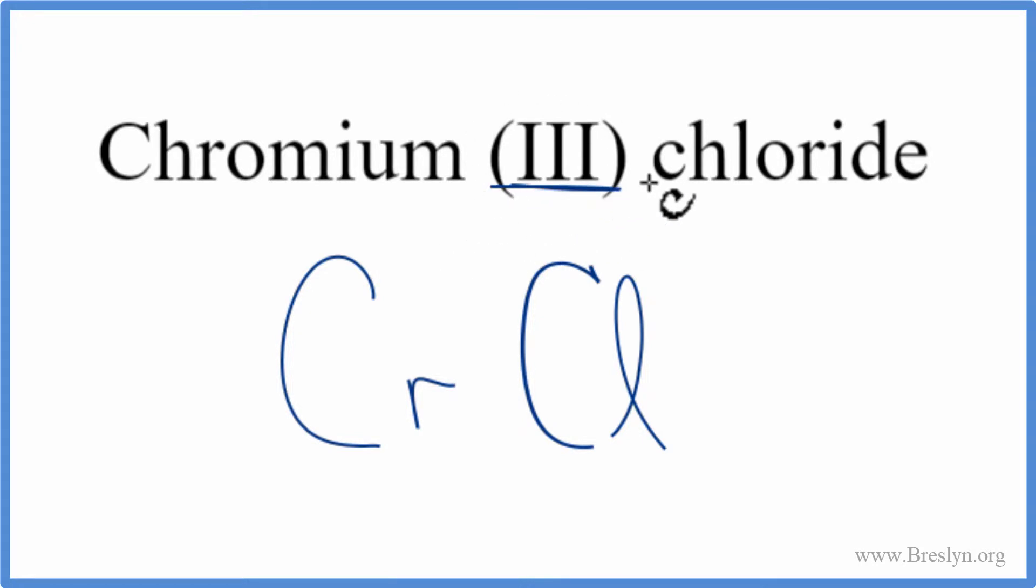Chromium, it tells us right here, this Roman numeral three, that's a three plus ionic charge. Chromium's a transition metal, so we have the Roman numerals here and they tell us the charge. Chlorine on the periodic table, one minus.